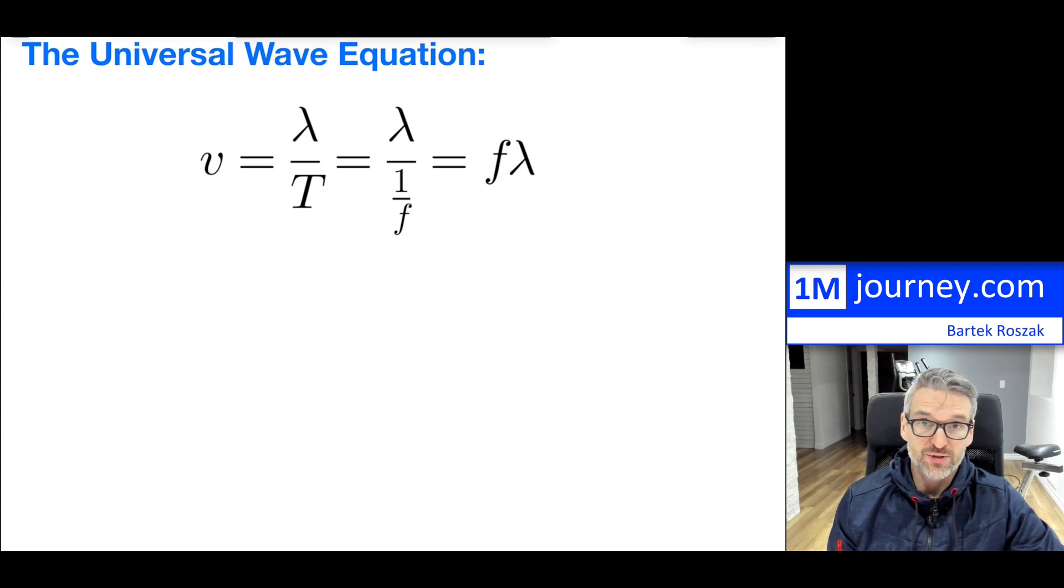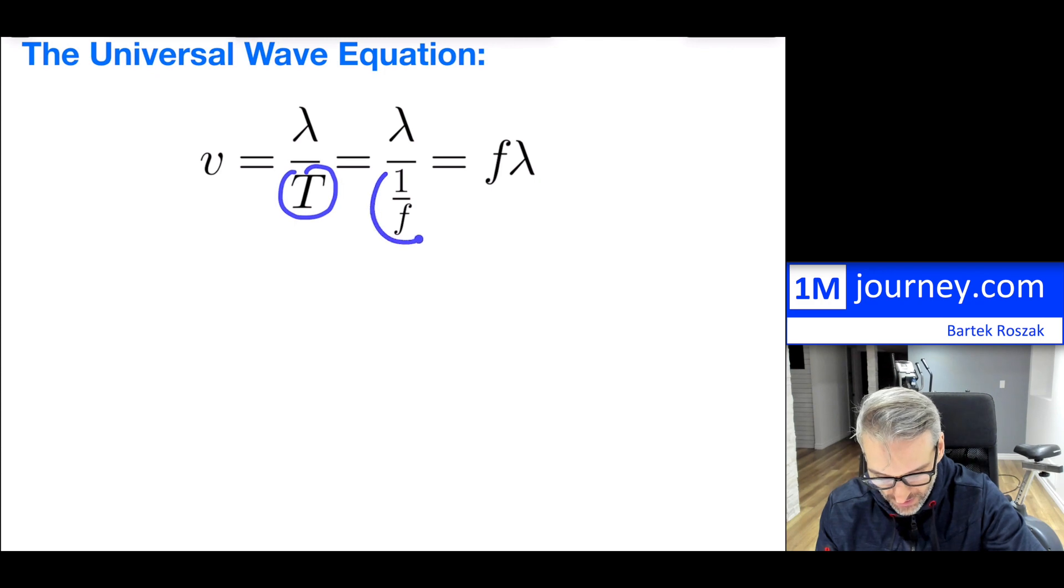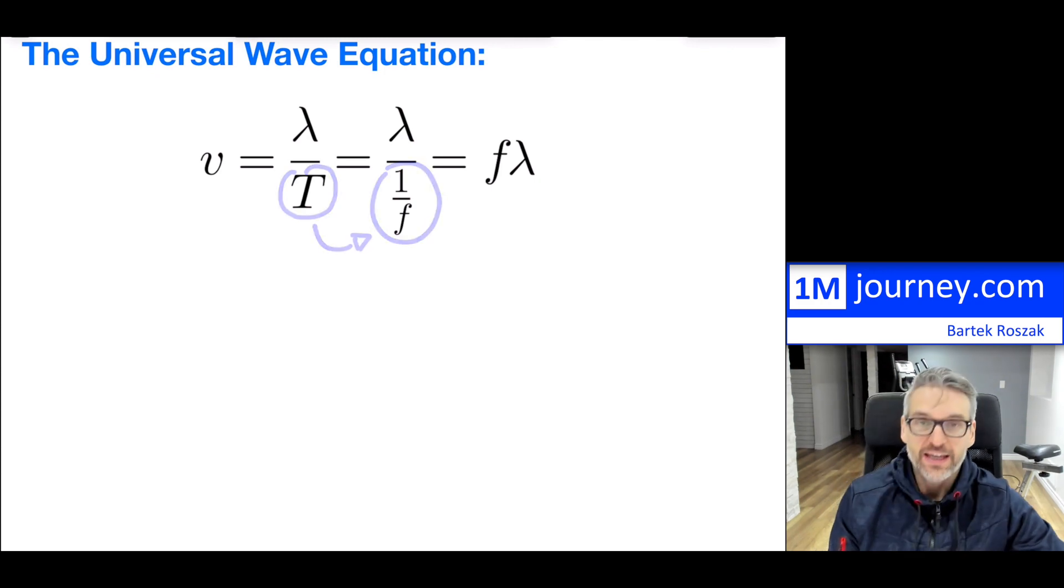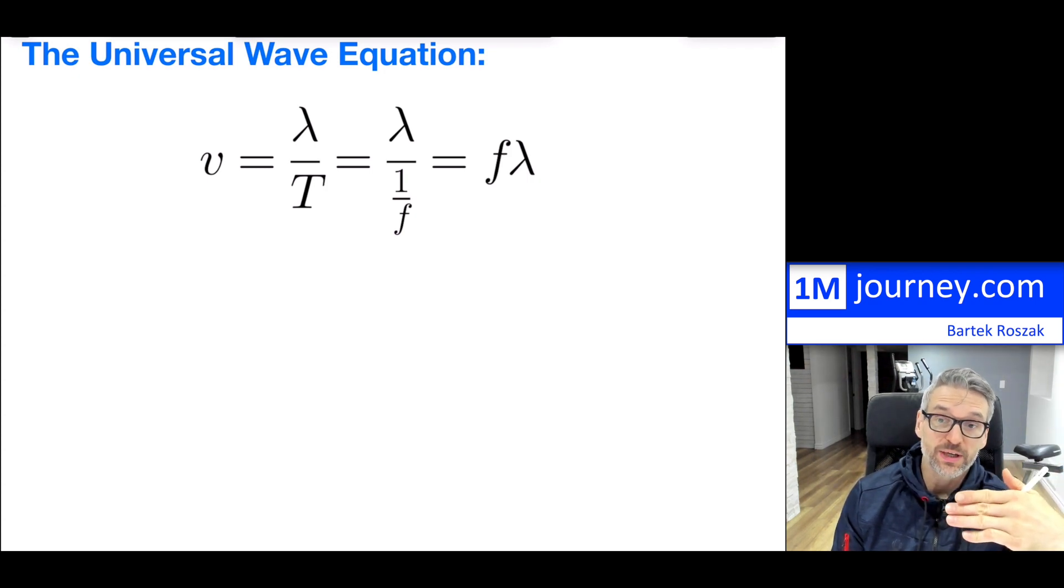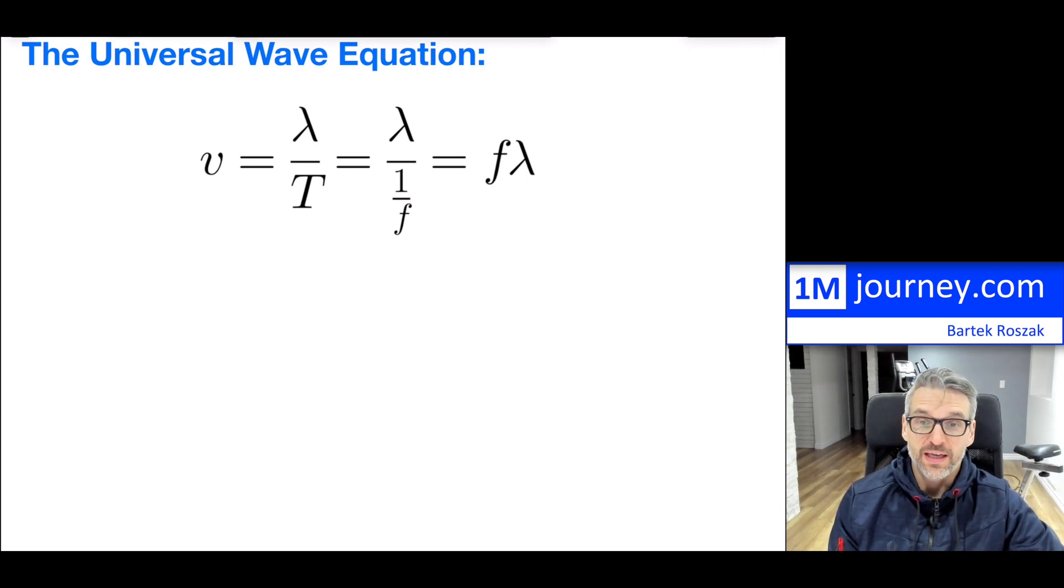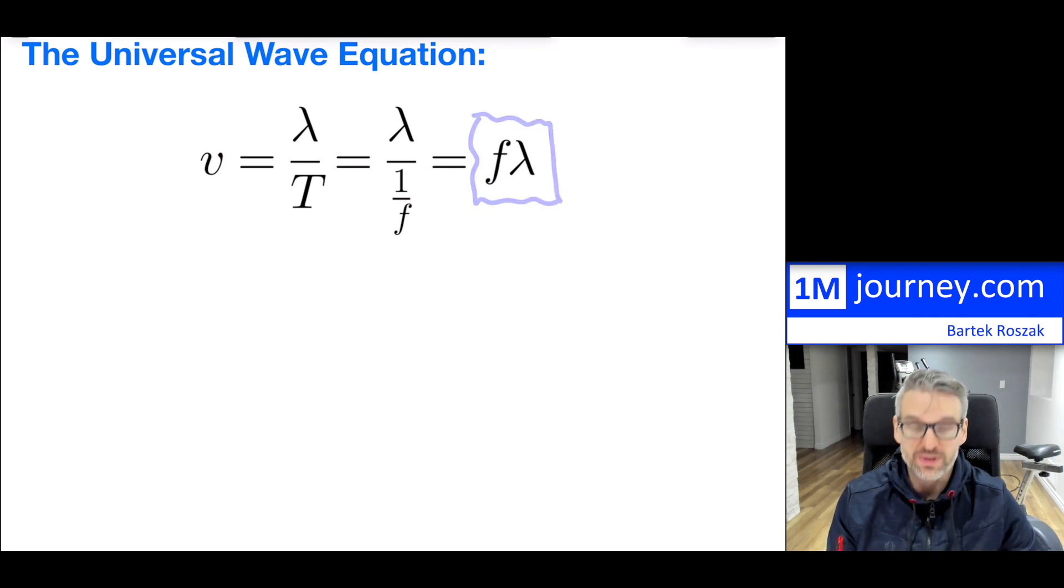Now we don't always like to utilize the period in terms of the division. And there is a very nice relationship between period and frequency. They are reciprocals of each other. The frequency is nothing else but simply the amount of cycles that happen over time. Because of the reciprocal, you will get our universal wave equation, which is frequency multiplied by lambda or by the wavelength.